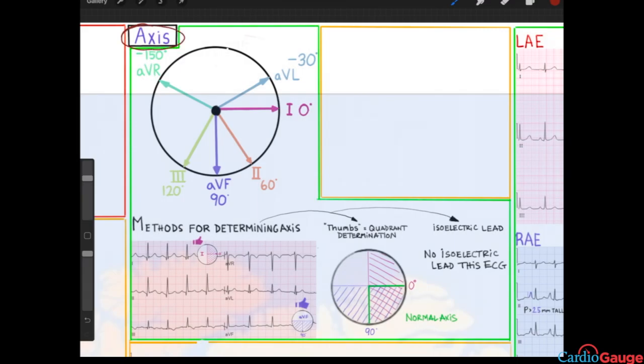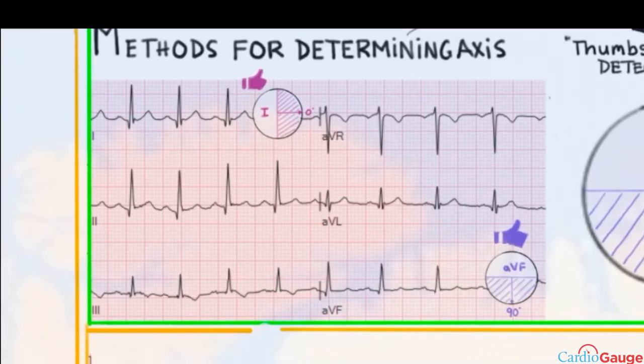On to axis. The axis is the direction that the heart depolarizes in and we look at it in the frontal plane. So that's just the limb leads. We're not talking about the V leads when we talk about axis.